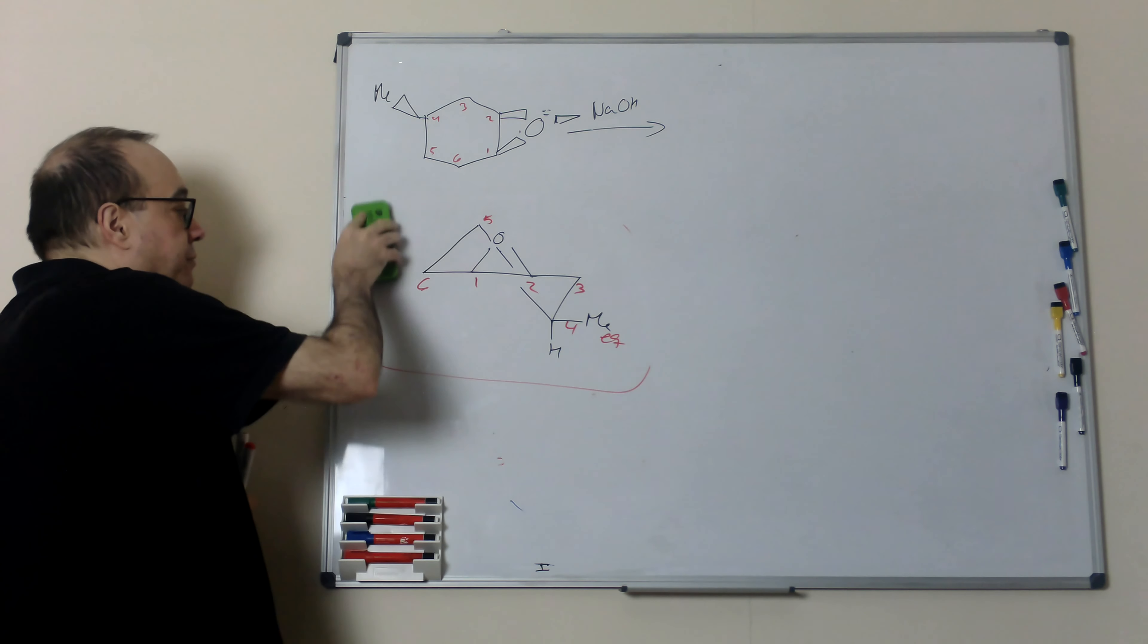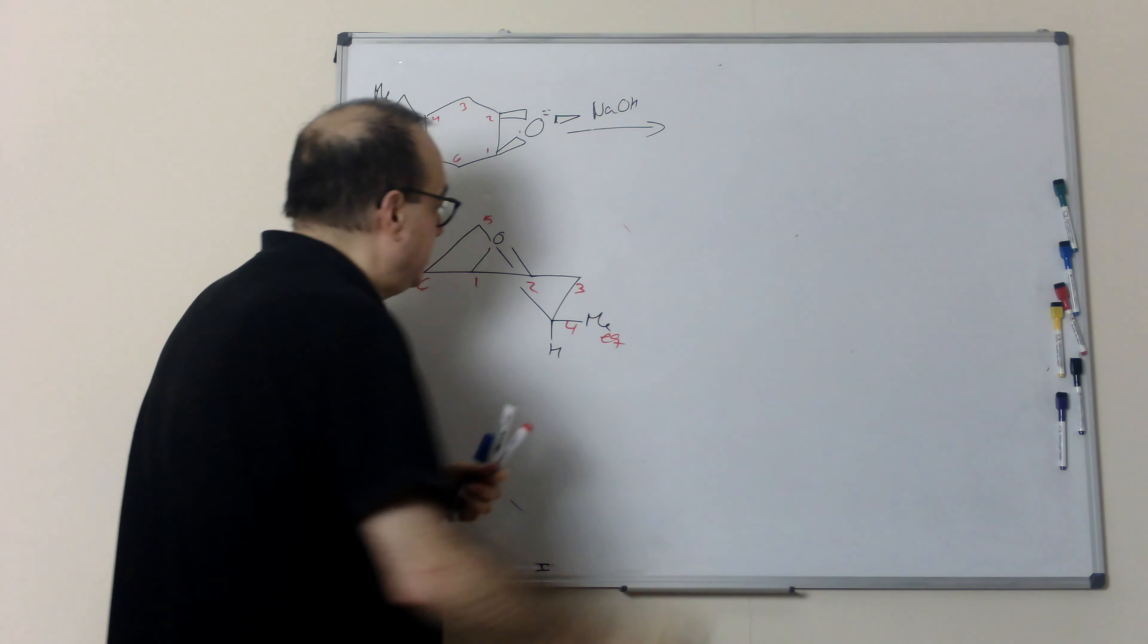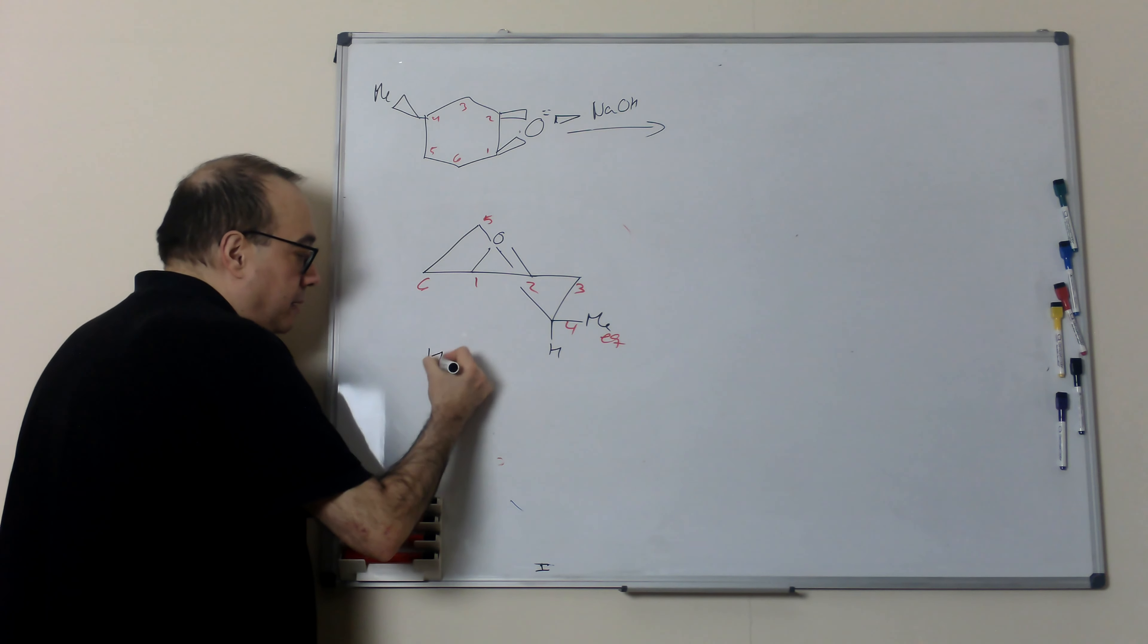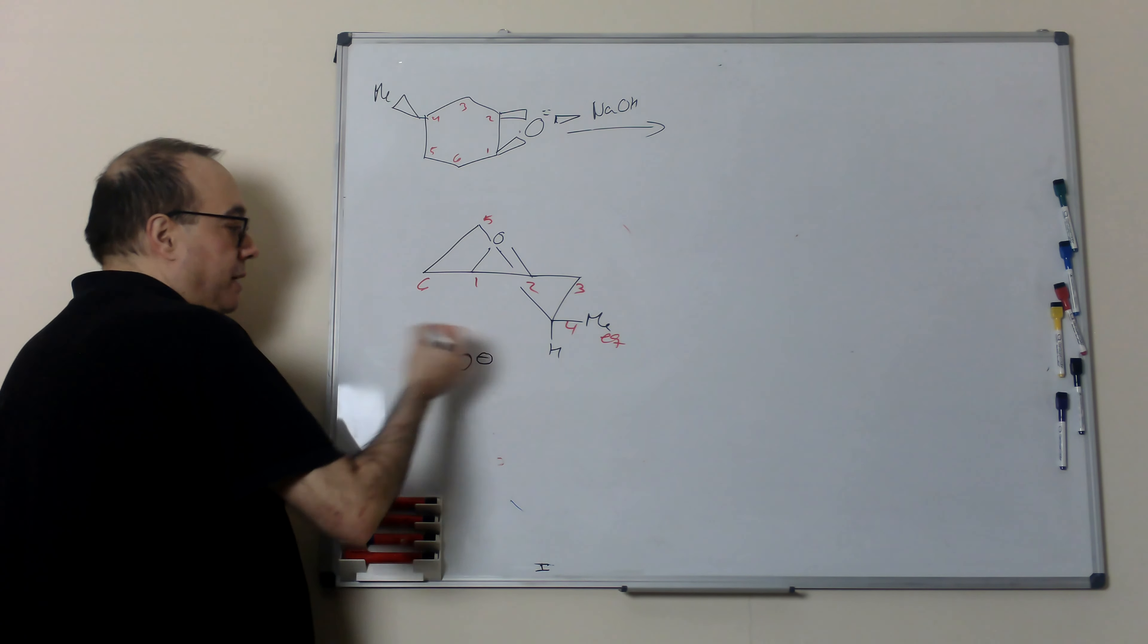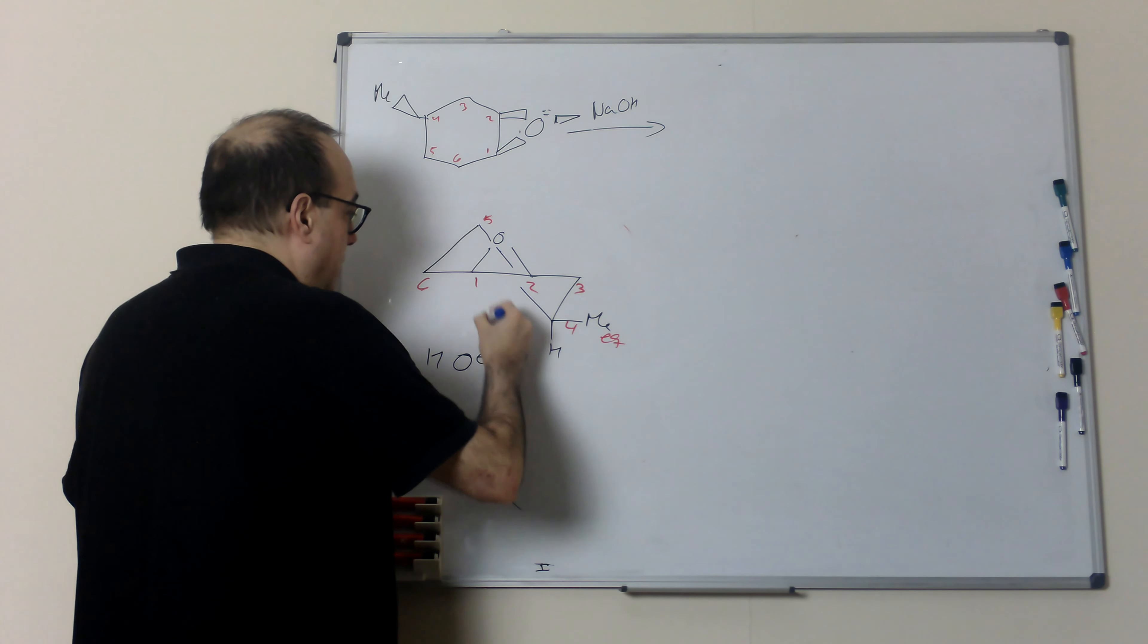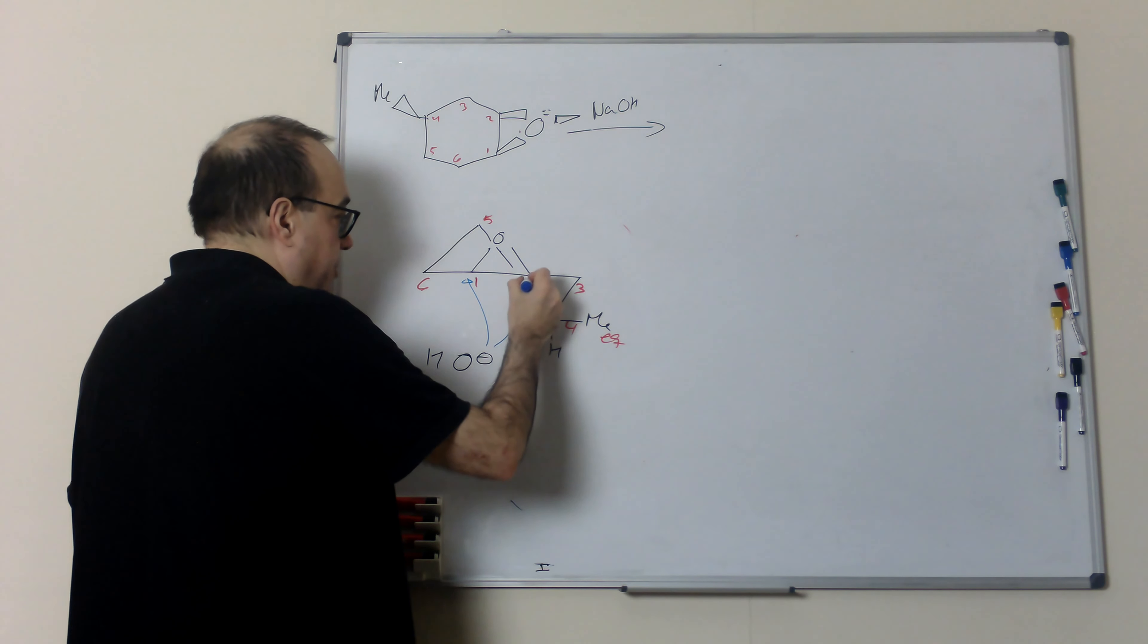When we have this, what we have to analyze is the trajectory of the nucleophile. In this case, the hydroxon group. The hydroxon group can attack position number one or position number two.